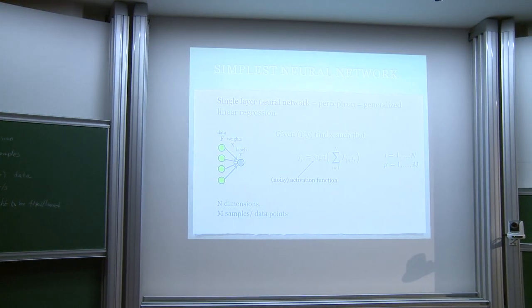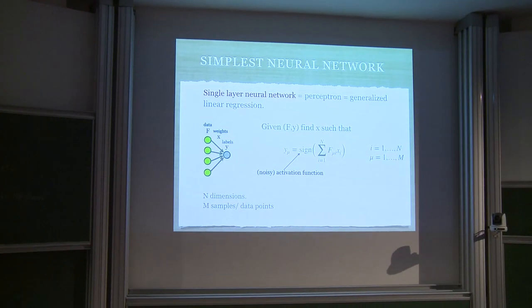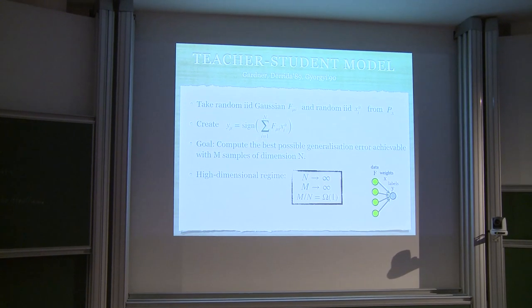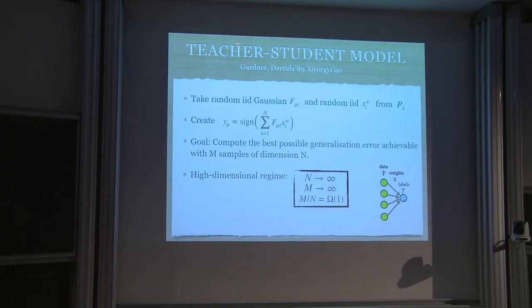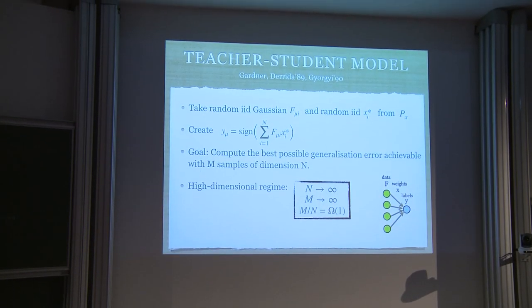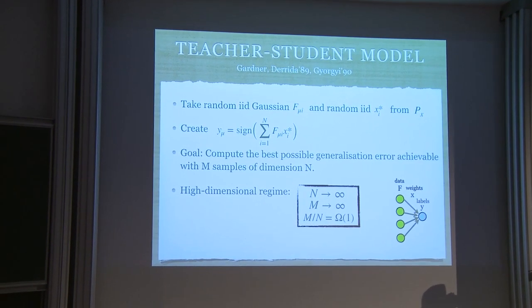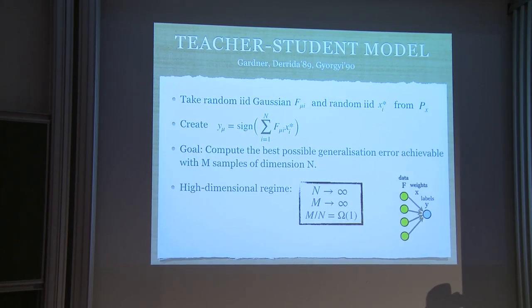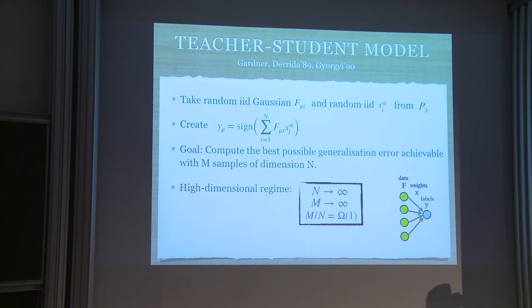So where is the modeling? It's actually a model that was studied in physics 30 years ago, exactly this model of a simple perceptron. They call it the teacher-student model. Instead of taking F as the true figures of cats and dogs, you take this matrix F as an IID Gaussian matrix — each element is just a Gaussian number. Then you take some ground-truth vector of weights X*, where each component is taken from some distribution P_X, which can be plus/minus one, Gaussian, or something very simple.